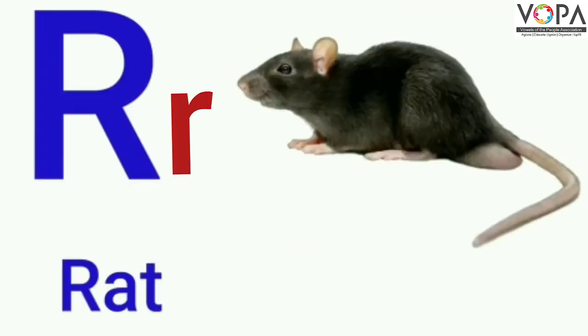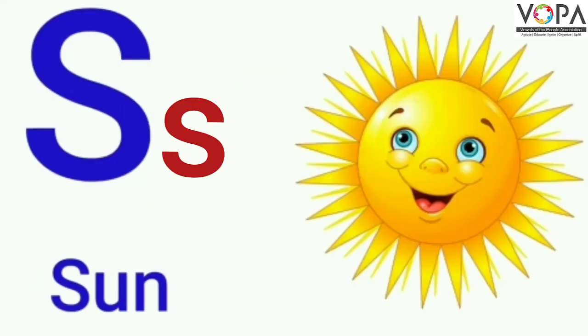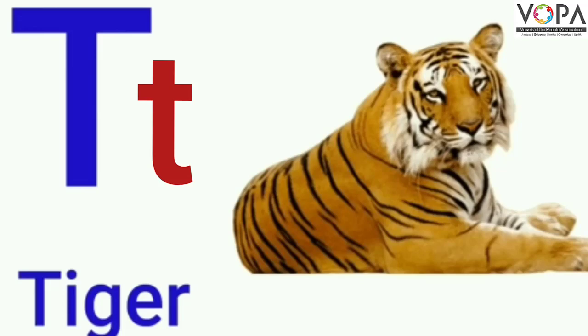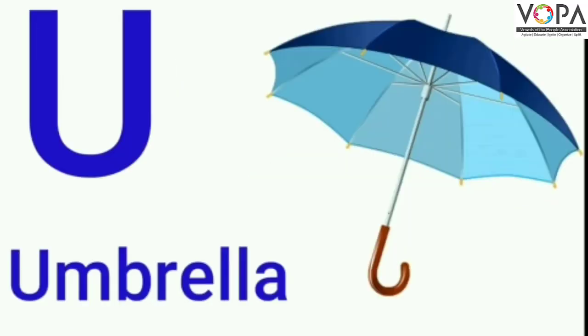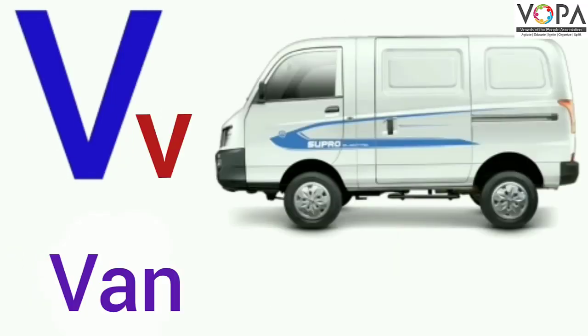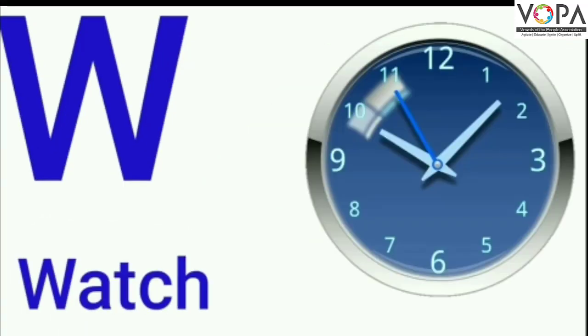R for Rat, S for Sun, T for Tiger, U for Umbrella, V for Van, W for Watch.